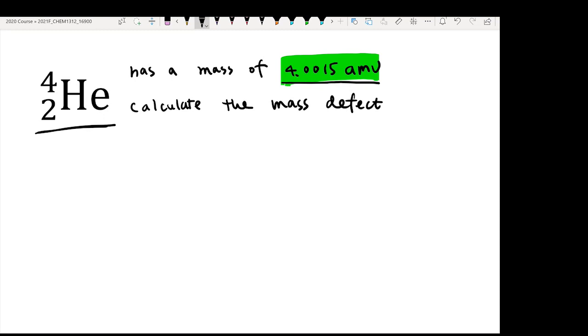From here, you can also calculate the hypothetical mass of this atom. Because here you know there's actually two protons and then two neutrons from this atomic symbol.